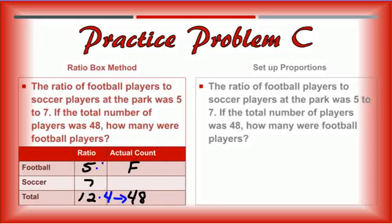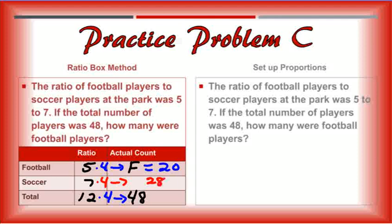So I know that 5 times 4 would give me F, which would give me 20. And if you wanted to solve for how many soccer players there would be, I would still multiply this by 4. And that would give me an answer of 28. 20 plus 28 is 48. But our answer to this problem would be 20.